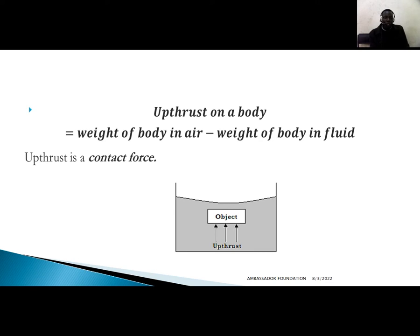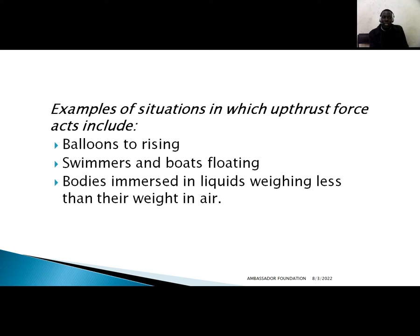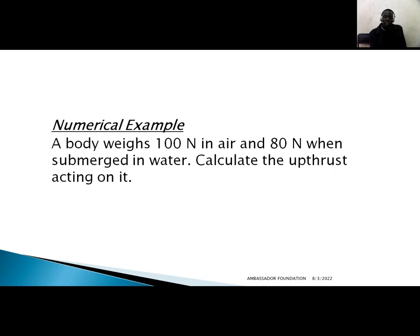To calculate upthrust, you take the weight of the body in air minus the weight of the body in the given fluid, and you get the upthrust. The weight in air is the actual weight; the weight in fluid is less because of the upthrust. Examples include balloons rising, swimmers floating, and boats floating — if not for upthrust, no one could swim in water. Example: a body weighs 100 Newtons in air and 80 Newtons when submerged in water. Calculate the upthrust acting on it.